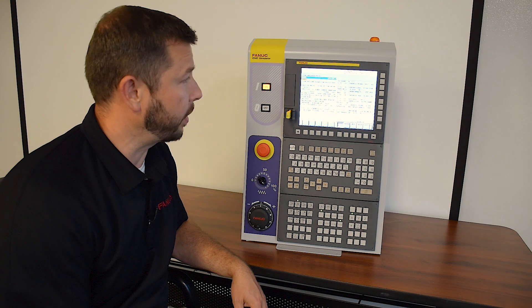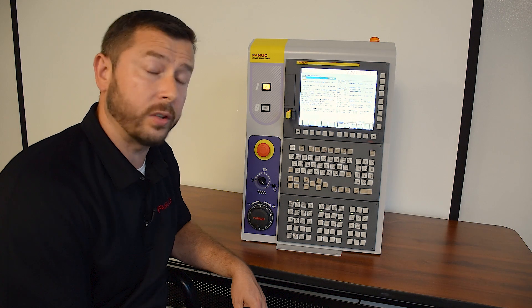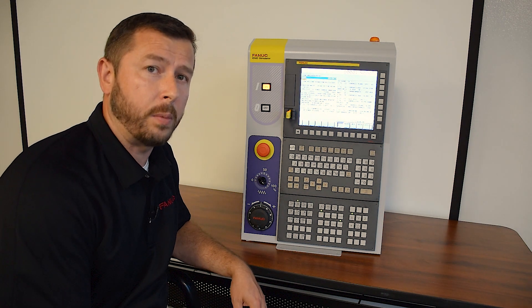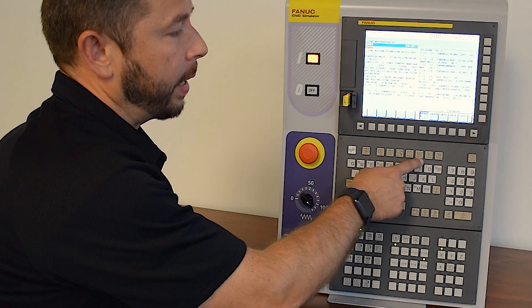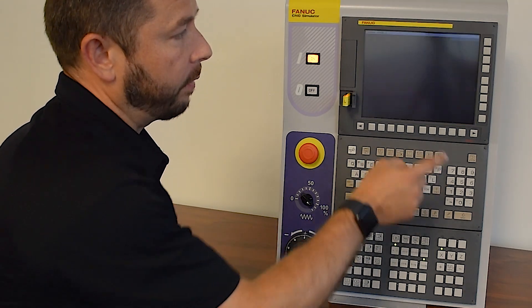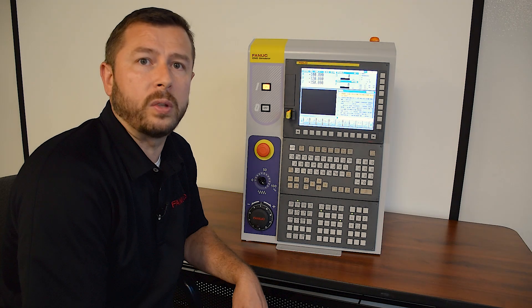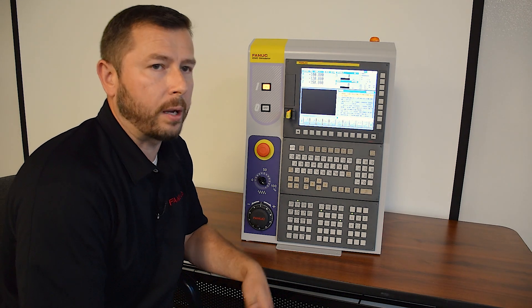Another feature on this control is a conversational programming interface made by Fanuc called Manual Guide Eye. On this simulator we access it by pressing the graph button for graphics. On some other machine tools there may be a different entry point to that, could be a different button.